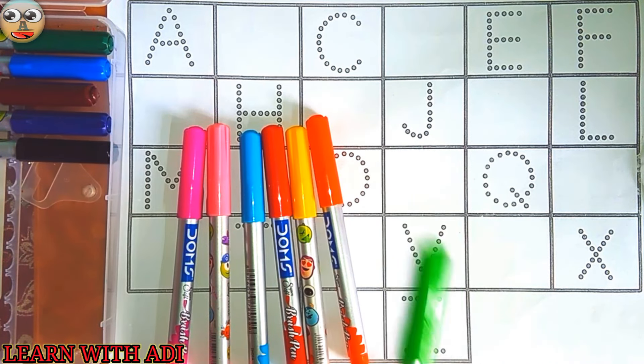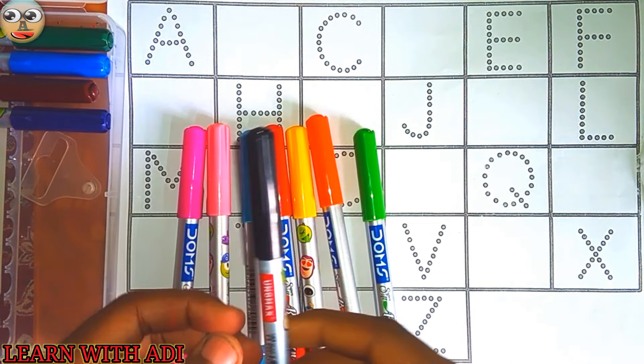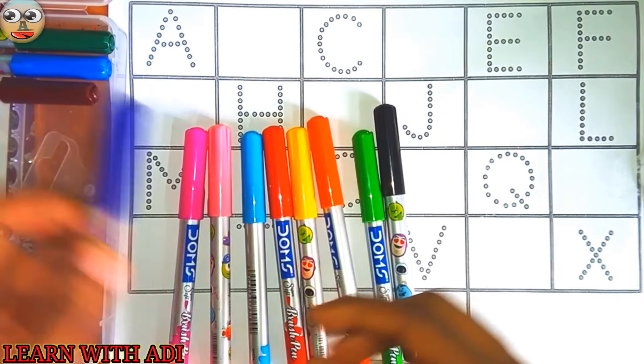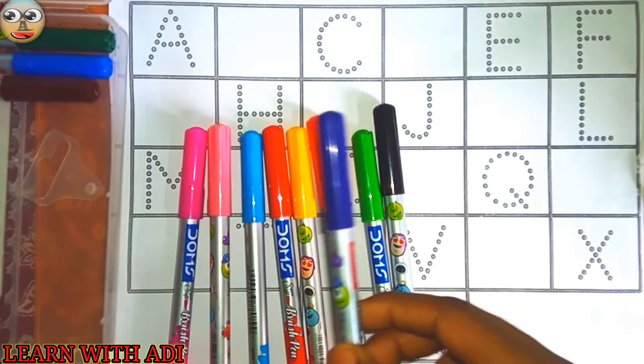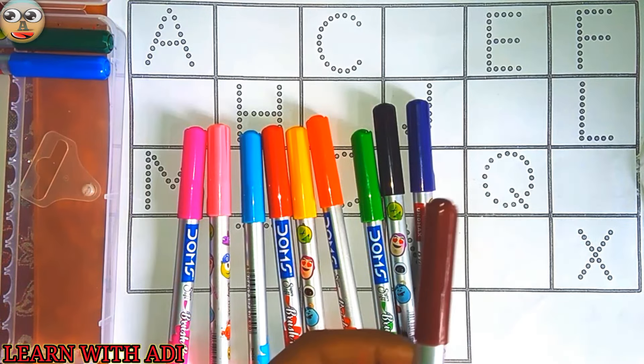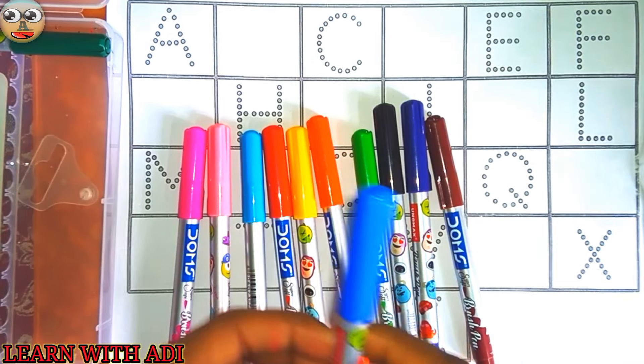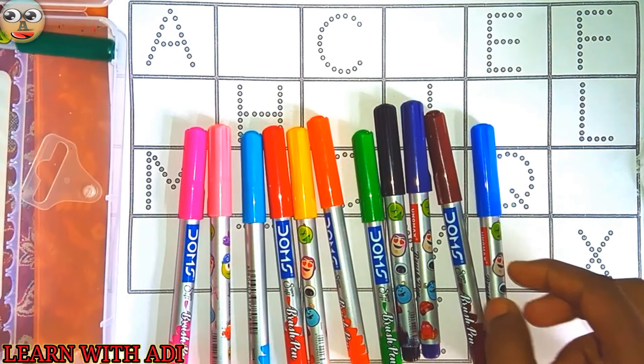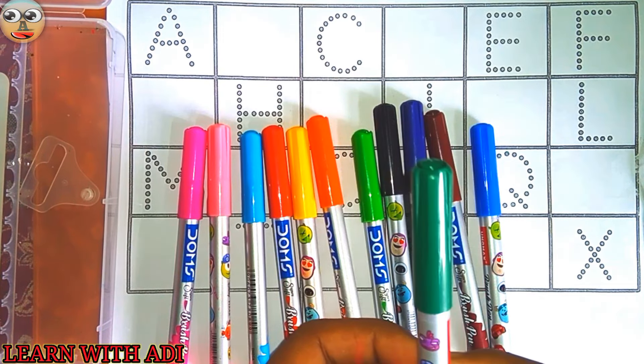This is green color, this is black color, this is purple color, this is brown color, this is blue color, and this is dark green color.